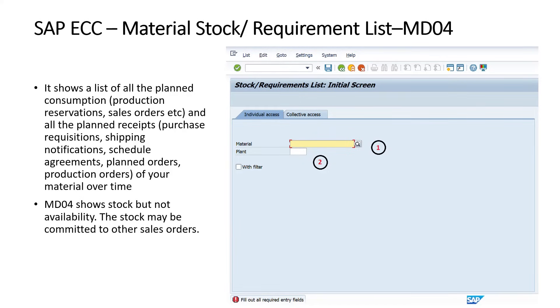The MD04 command does not show the availability of the stock. It shows us the stock plus its reservations or its issuances.